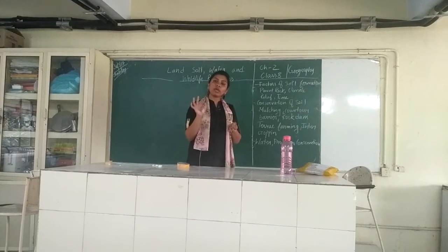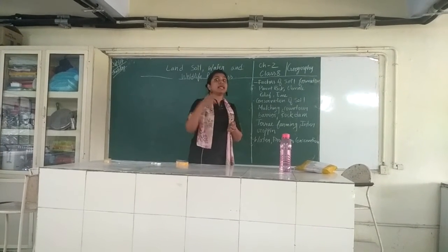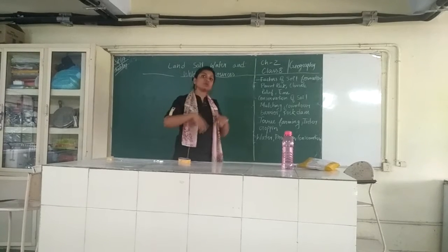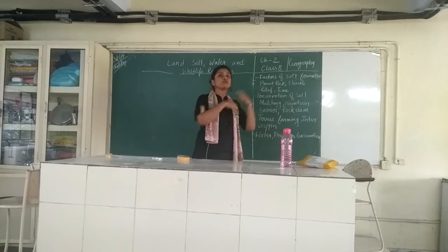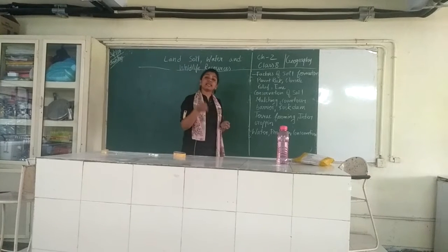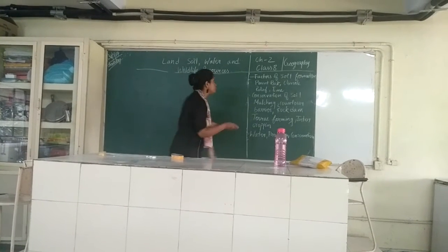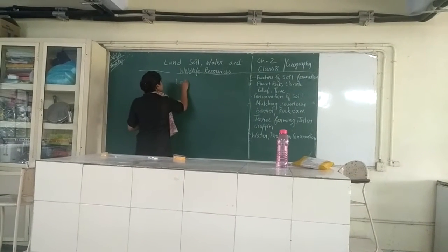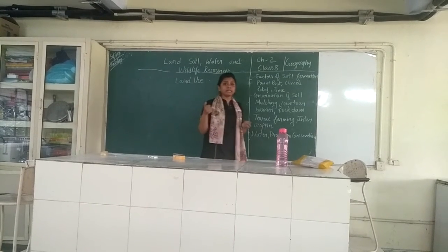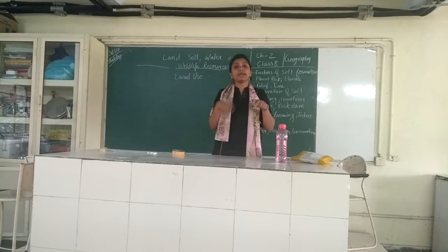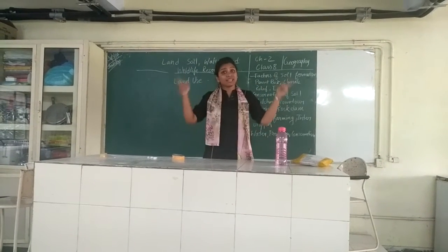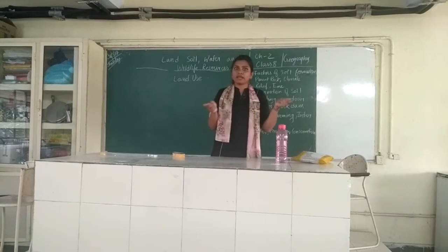In the previous class we learnt about land resource. Land is a resource where the maximum number of people live, with uneven distribution of population. We also learnt about land use — how the land is being used, and how land will be better distributed and used.